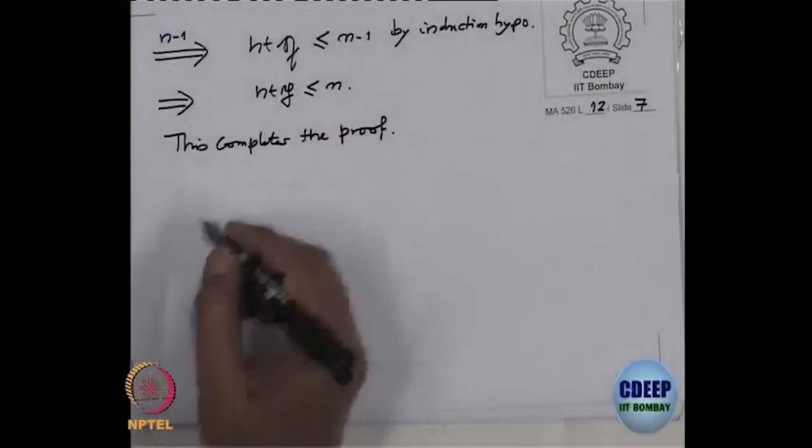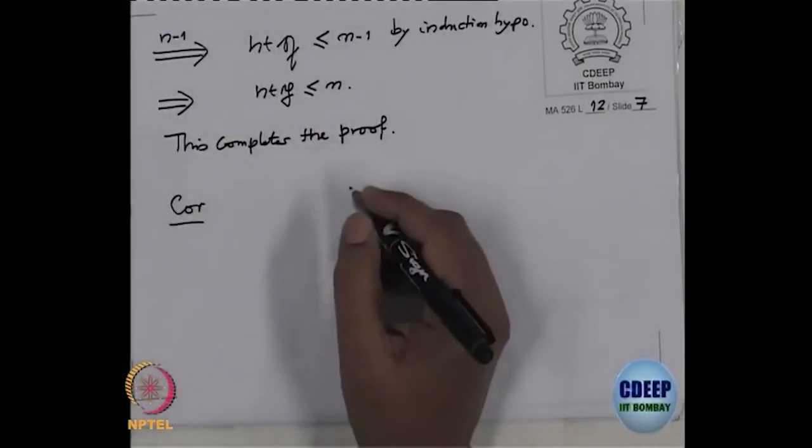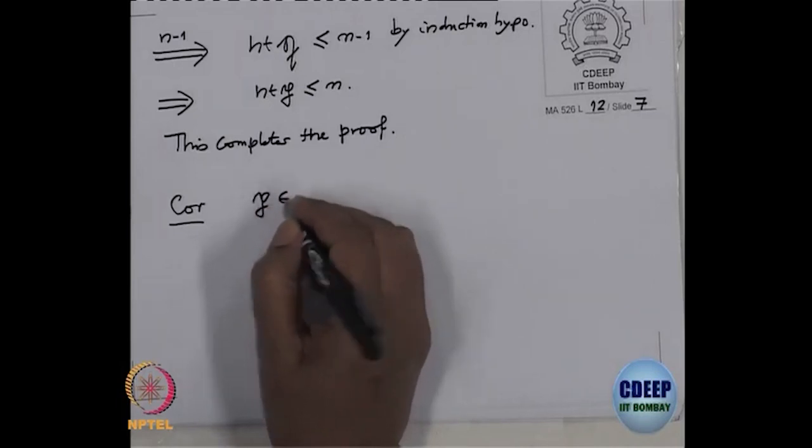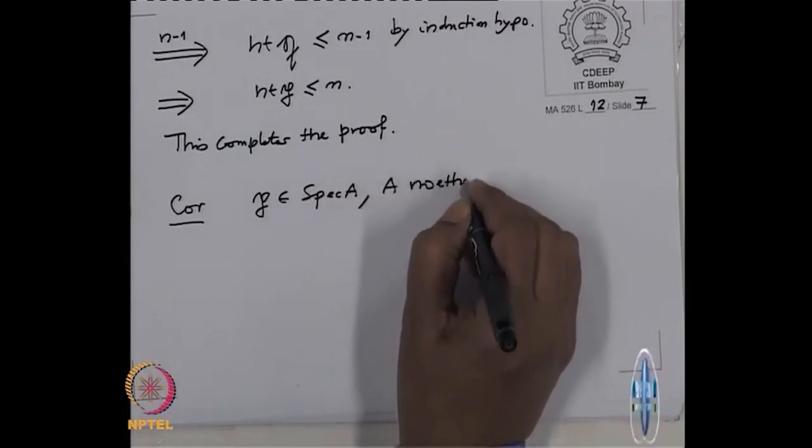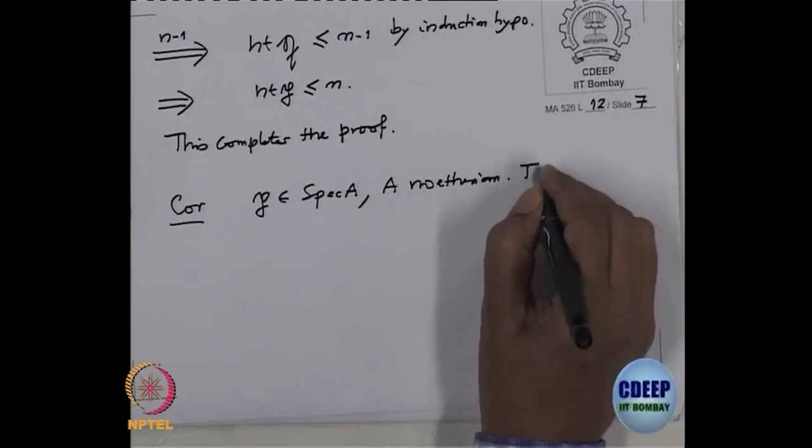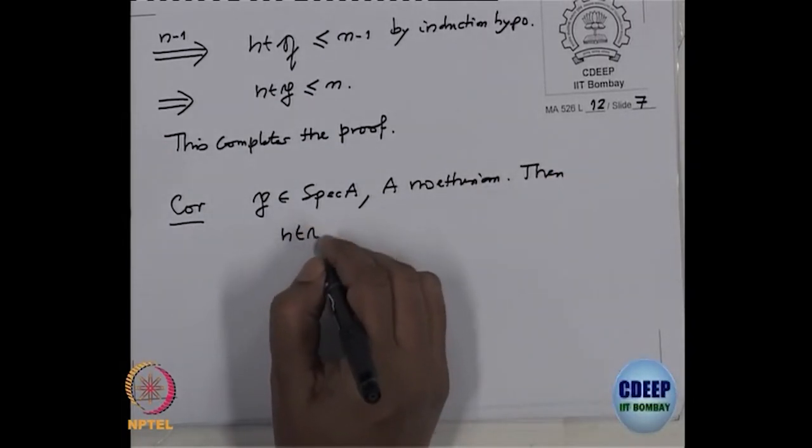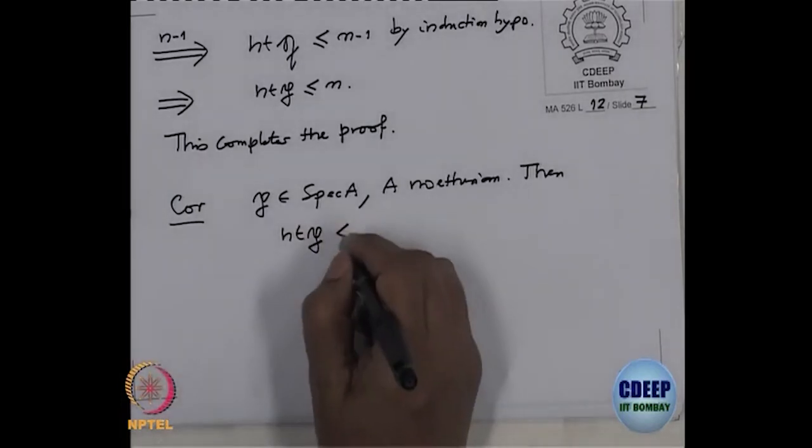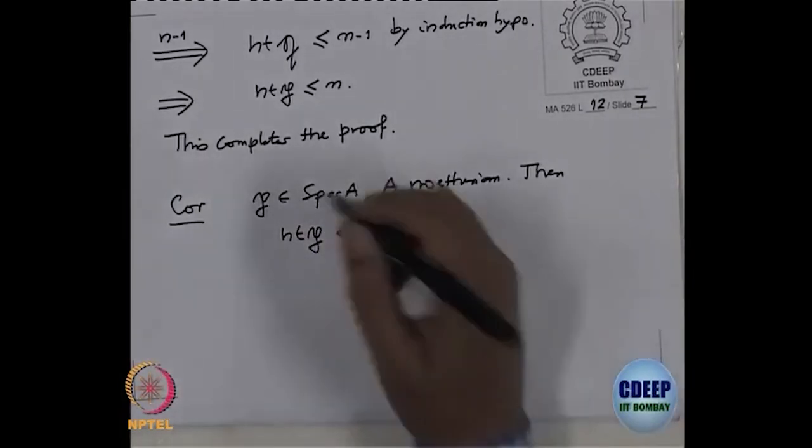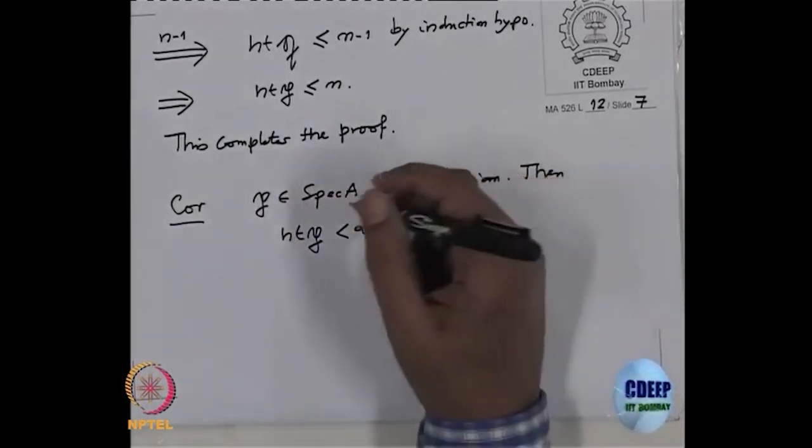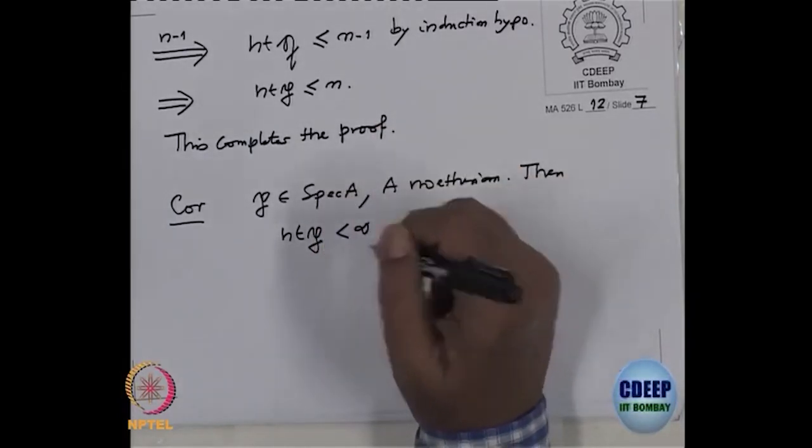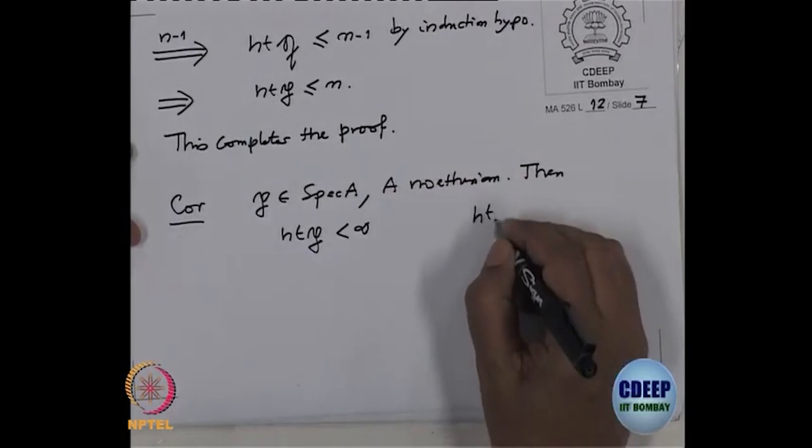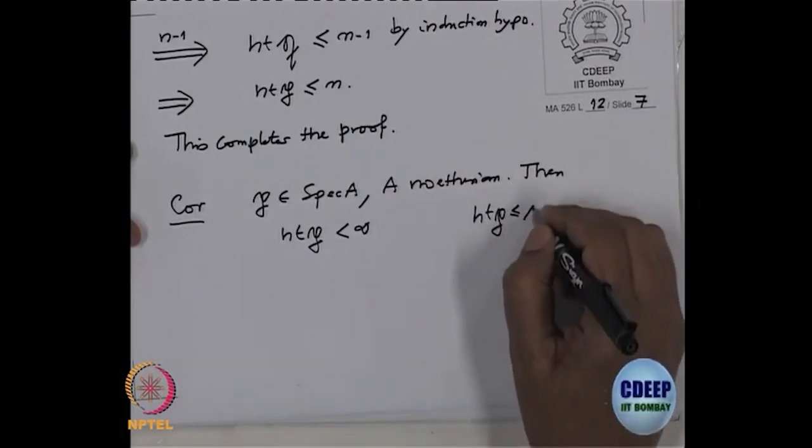Now here also, the immediate corollary to this is if I have a prime ideal P in any Noetherian ring, then height of P is finite. Because this P will be generated by some element, and then we apply the proofs generalized to this P. So height P will be less than or equal to mu of P. That's what we noted last time.